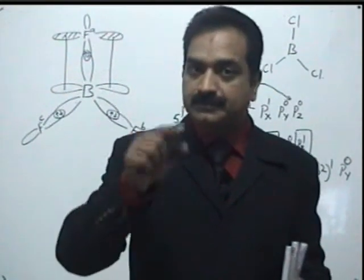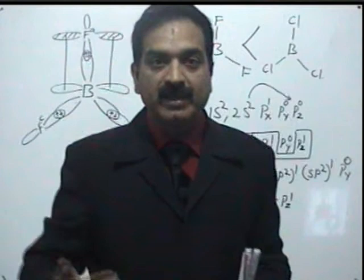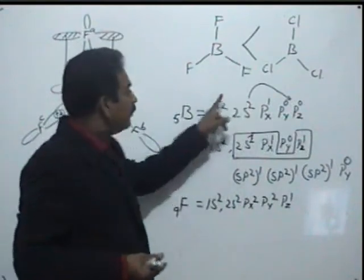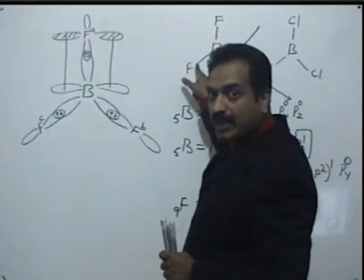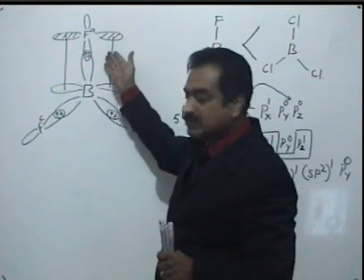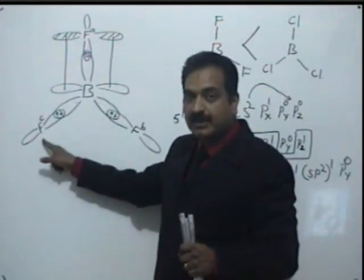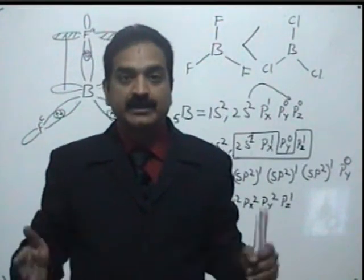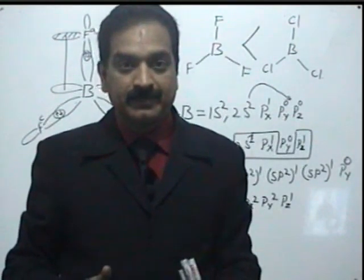Similarly, in BF3 the bond between B and F is a single bond, so bond order should be 1. However, the actual bond order is 1.33. This is because of back bonding: the normal sigma bond gives a bond order of 1, and the back bond — which resonates among Fa, Fb, and Fc — increases the bond order by one-third, giving a final bond order of 1.33. These two points can be explained on the basis of back bonding.